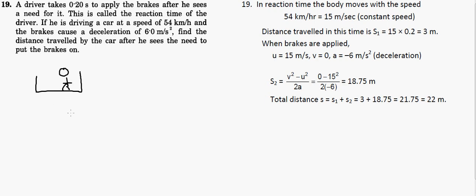The body moves with the speed of 54 kilometers per hour. Let's convert 54 kilometers per hour into meters per second by multiplying by 5/18, so we'll get 15 meters per second.